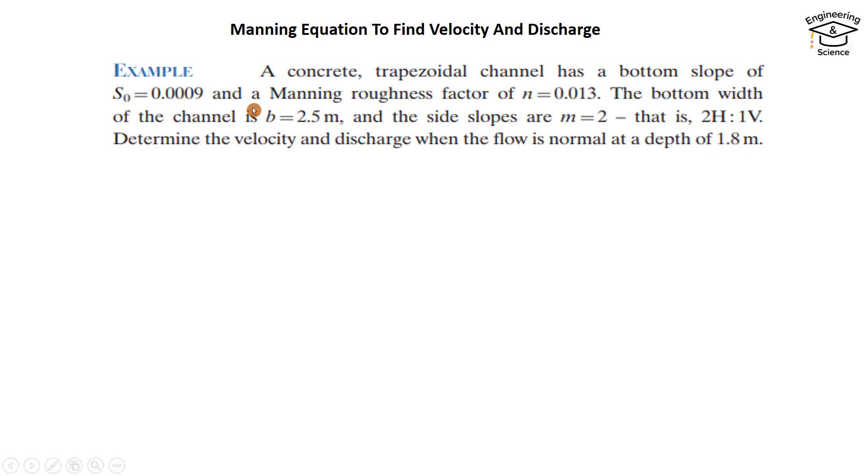The bottom width of the channel is b = 2.5 meters, and the side slopes are m = 2, which means two horizontal to one vertical.